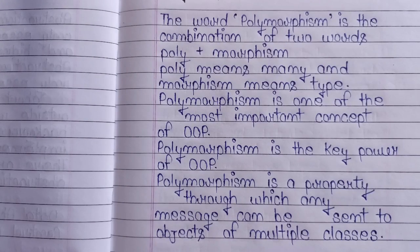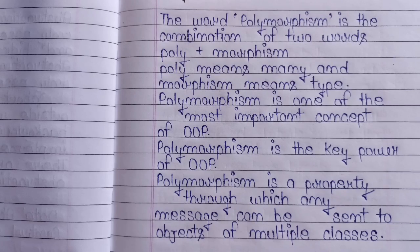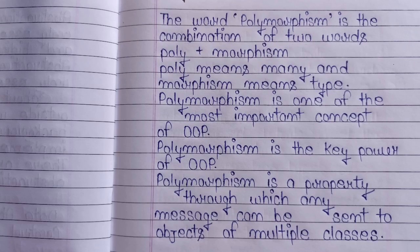Polymorphism combination है दो words का: poly plus morphism. Poly means many और morphism means type. Polymorphism एक concept है जिसमें हम एक same object को different type से use करते हैं — meaning many types, many forms. A single object को हम different type से use करते हैं. Polymorphism is the power of object-oriented programming.